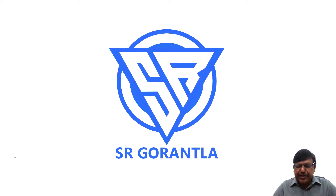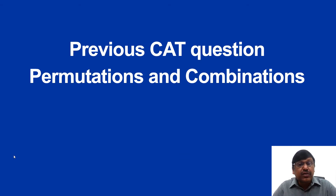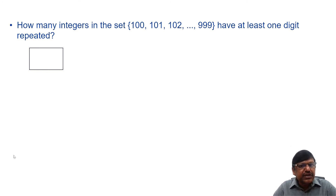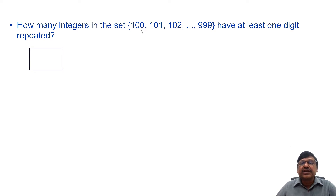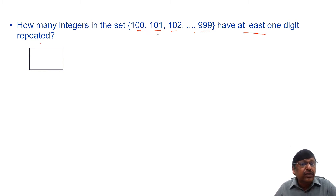Hello students, welcome to my channel. In this session we will discuss a previous CAT question on permutations and combinations. The question is: how many integers in the set {100, 101, 102, ..., 999} have at least one digit repeated? Please make an attempt before continuing to watch.